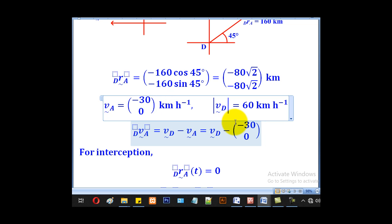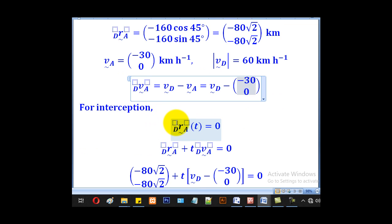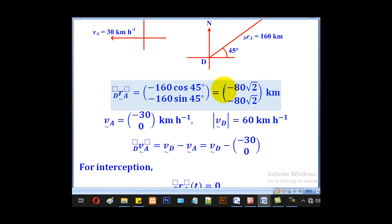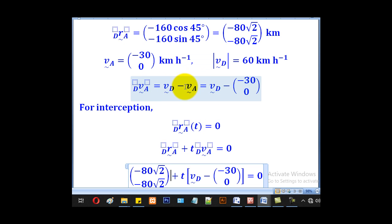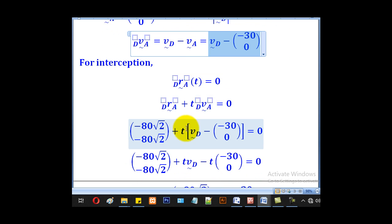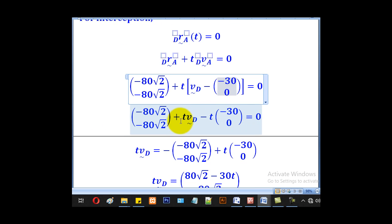For collision or interception to occur, the relative displacement at time T must be equal to 0. This relative displacement is given by initial relative displacement plus time T times the relative velocity. We substitute the relative displacement we already got and the relative velocity. When we open brackets and make v_D the subject, we shall get v_D = v_A - (initial relative displacement)/T.